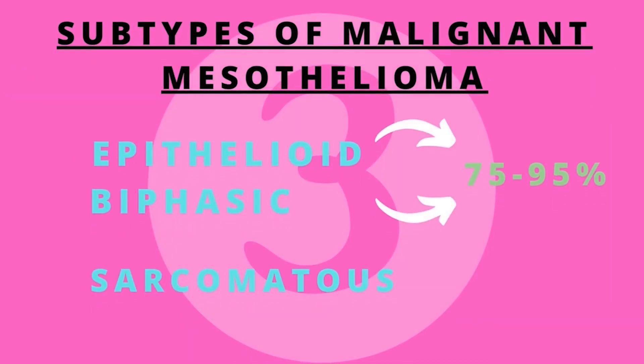Subtypes of Malignant Mesothelioma. There are three main histological subtypes of malignant mesothelioma: first is epithelioid, second is sarcomatous, and third is biphasic.